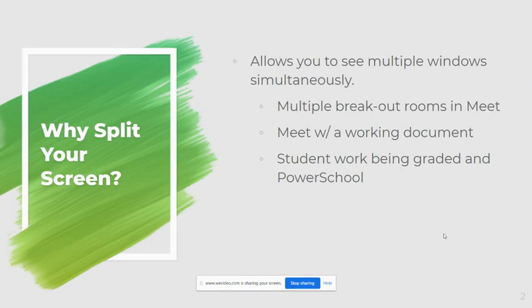This works particularly well for breakout rooms in Google Meet. It would allow you to see multiple rooms that students are meeting in at the same time so you can easily monitor what's going on in each. It also works well if you want to have your Google Meet on one side of your screen and a working document on the other — that document might be a Jamboard you're all working in together as a class, or perhaps your presentation, so you can see what your students are doing alongside that document.